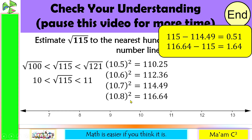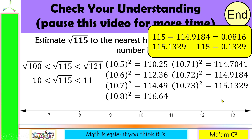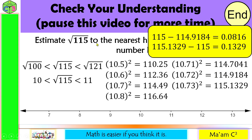Now I'm going to square numbers with two decimal places that are closer to 10.7 than to 10.8. These are 10.71 squared, 10.72 squared, and 10.73 squared. 10.73 squared is already greater than 115, so I don't need to get 10.74 or 10.75. 115 minus 114.9184 is 0.0816, and 115.1329 minus 115 is 0.1329. The smaller difference is 0.0816, so 115 is closer to 114.9184. Therefore, square root of 115 is equal to 10.72.